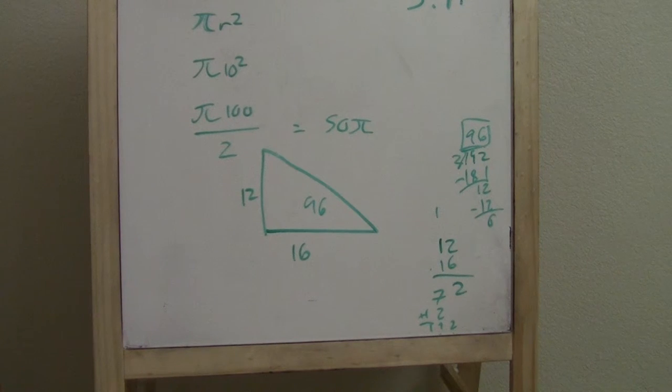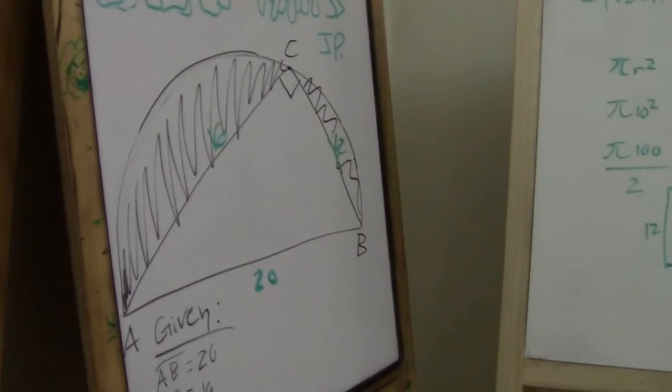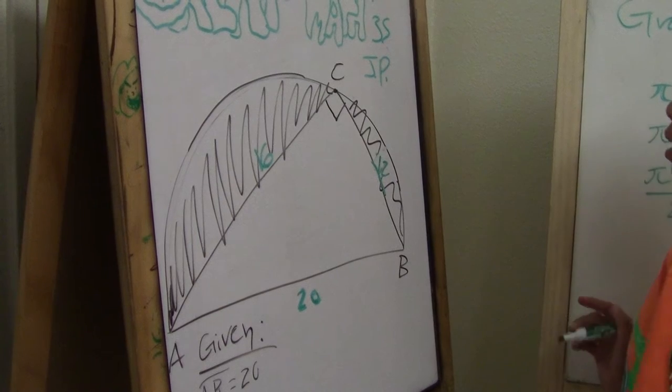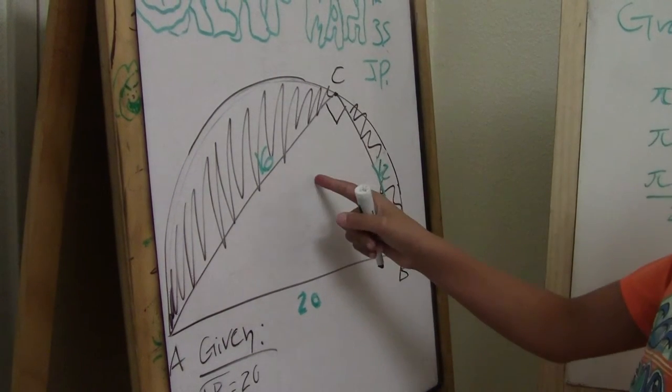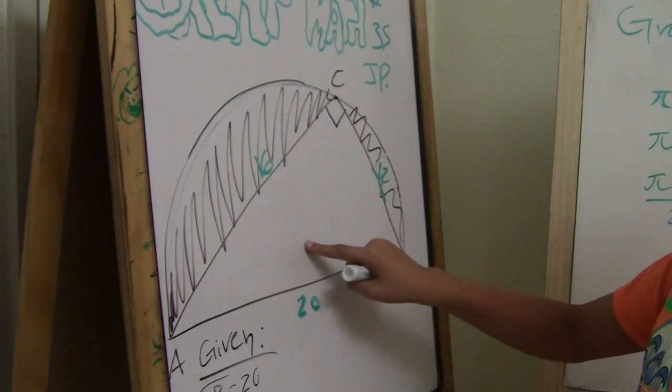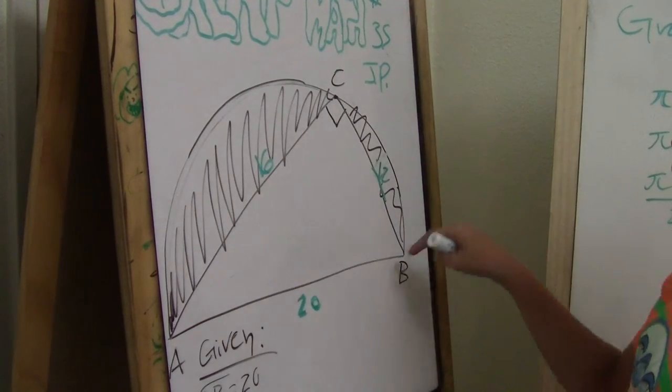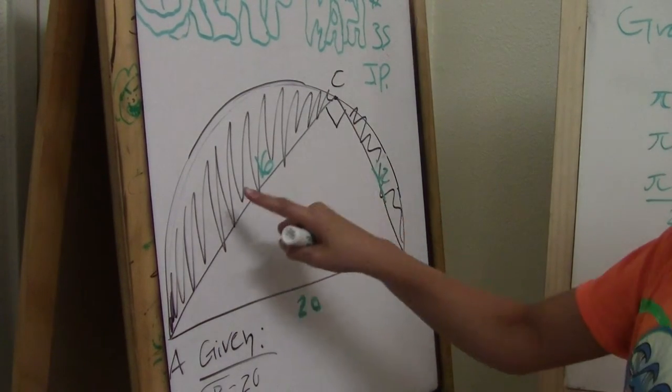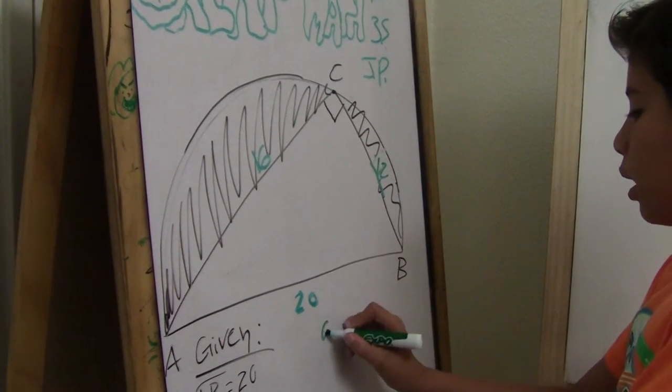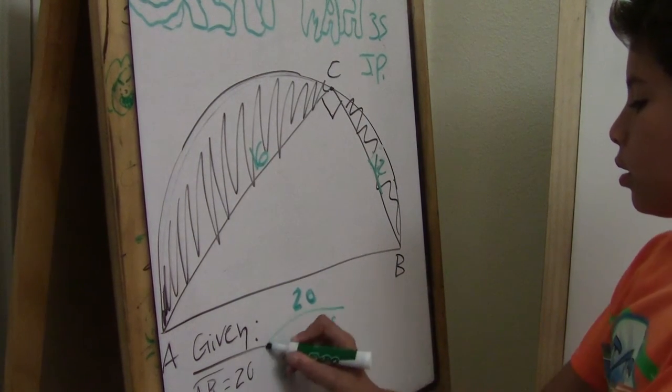Now, to find what that is, we're going to have to do 50 pi minus 96. Remember, it's 50 pi minus 96, not 96 minus 50 pi, because that would mean it would be negative. So it has to be the entire thing minus this part will give us whatever's left. So 50 pi minus 96 is our answer.